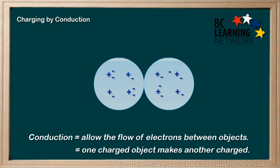Once this happens and the objects are separated, they're both negative. Not as negative as the original object, as now those extra electrons are spread between the two objects, but nevertheless they're both now carrying a net negative charge. You've charged a neutral object using conduction.